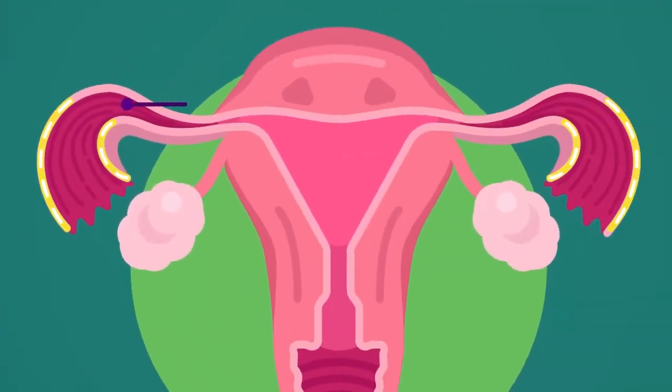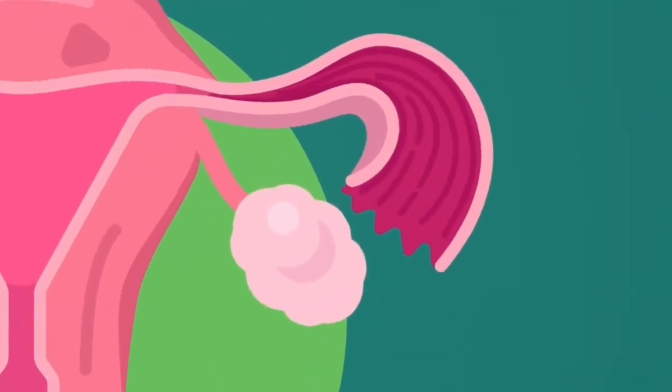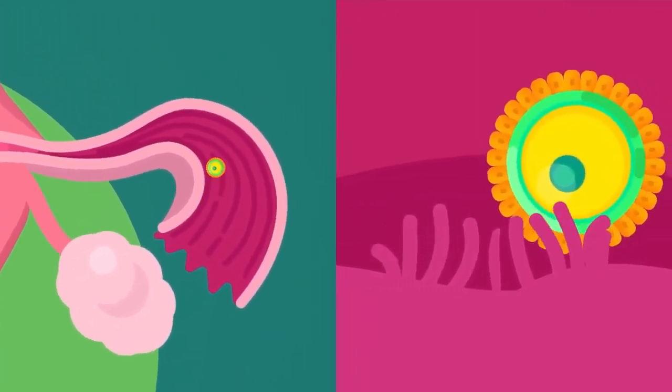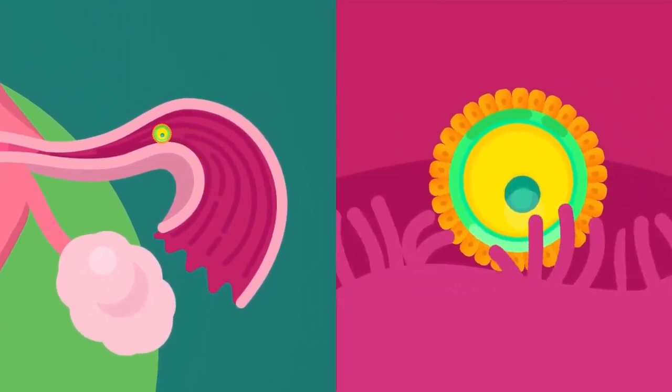There are two oviducts. Each oviduct, also called the fallopian tube, is a narrow muscular tube. It leads from the ovary to the uterus. The anterior portion of the oviduct has a funnel-shaped opening called infundibulum. Cilia on the inner lining help move the egg to the uterus. The egg is fertilized in the oviduct.